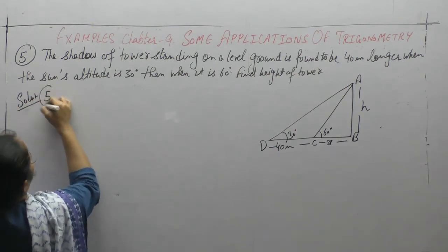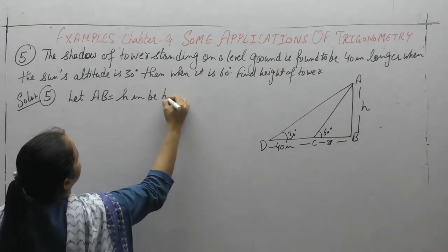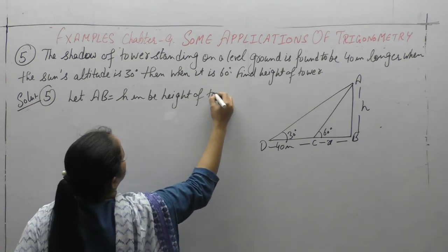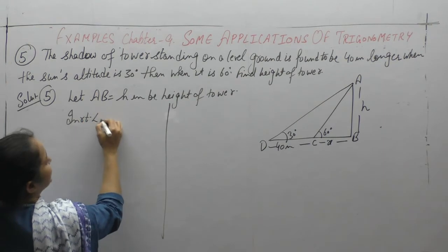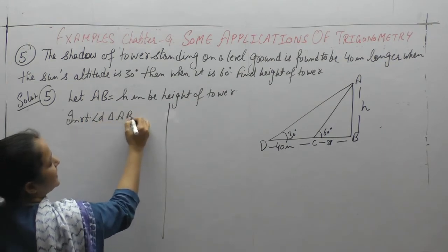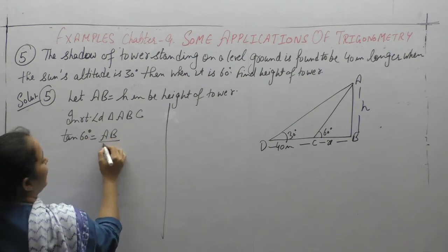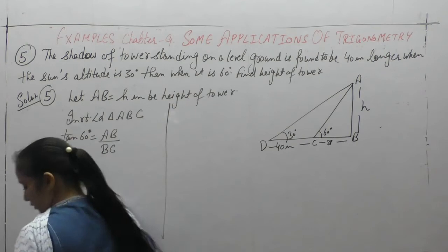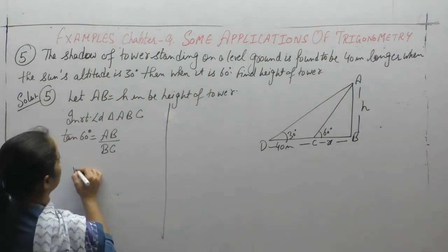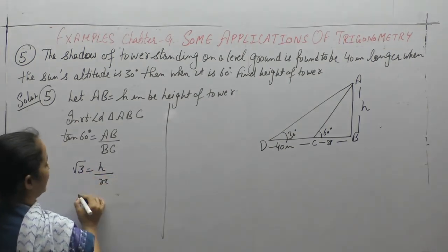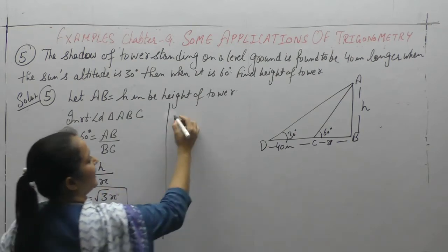Let AB equals h meter be height of tower. Now in right angle triangle ABC, tan 60 equals AB upon BC. यह होता है हमारे पास. So what is the value of tan 60 degree, that is root 3. AB is h. यहां से हमारे पास h की value आ गई, square root of 3 into x.